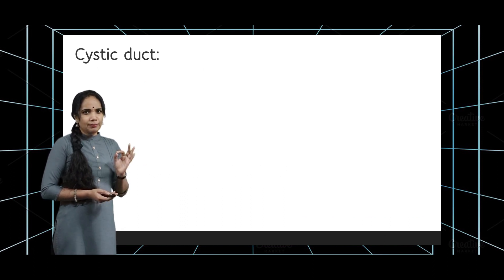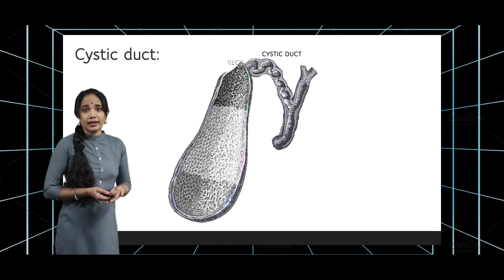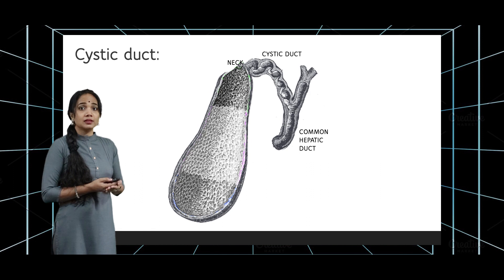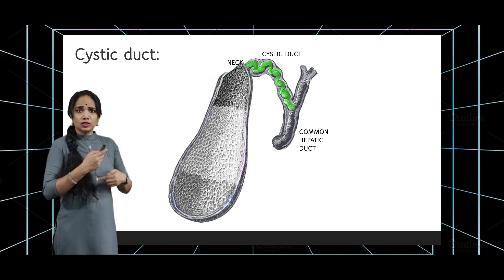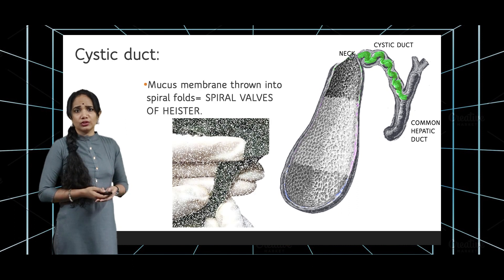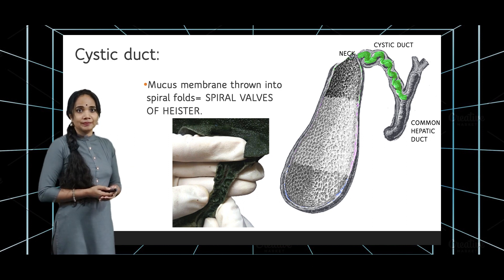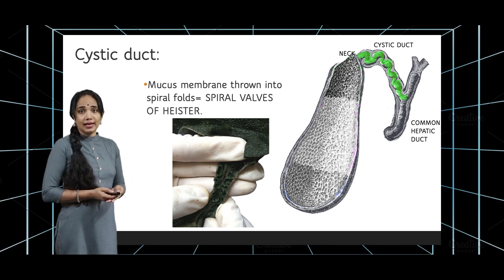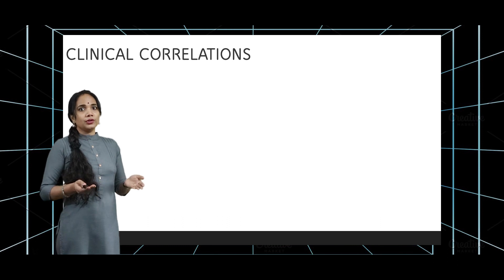The cystic duct joins the neck of the gallbladder and connects to the common hepatic duct at an acute angle, after which the common hepatic duct becomes the common bile duct. The inner surface of the cystic duct is highly twisted and the mucosa is folded in a spiral manner — this is called the spiral valves of Heister, as can be clearly seen when the cystic duct is opened out.